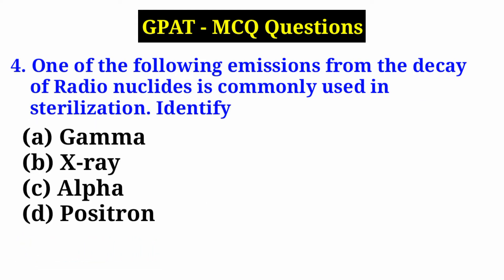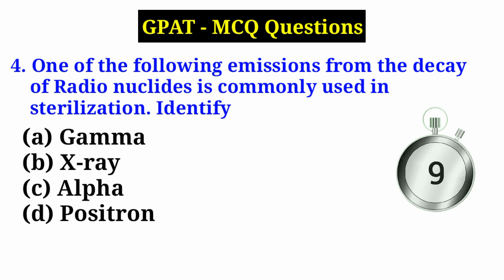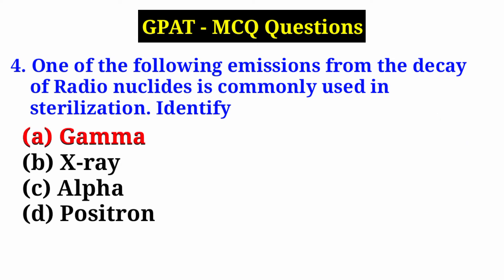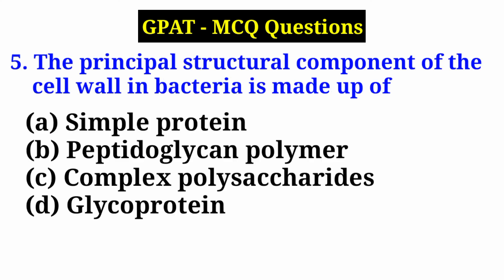Question 4: One of the following emissions from the decay of radionuclides is commonly used in sterilization — identify which radioactivity is used. Option A: gamma rays, Option B: X-rays, Option C: alpha, Option D: positron. Answer is Option A — gamma rays. In radioactive material, gamma rays are emitted and used for the sterilization process.